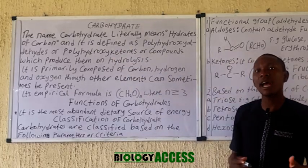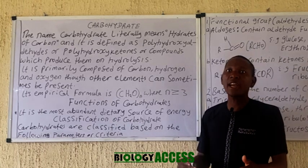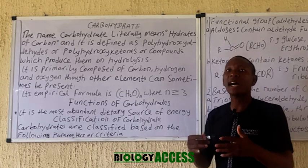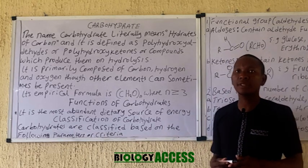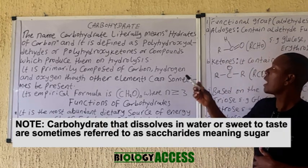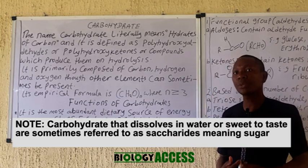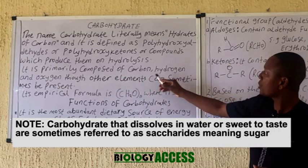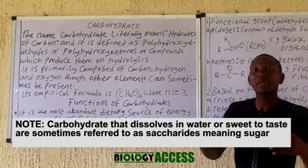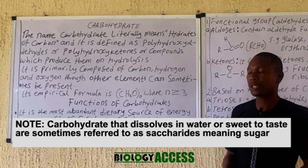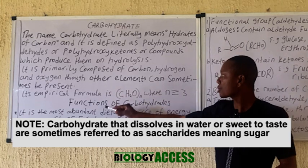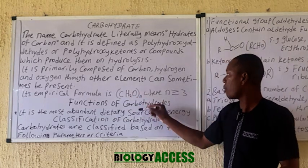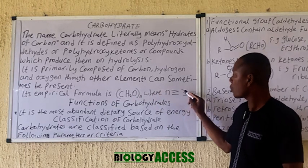Carbohydrates literally means hydrate of carbon, and it is defined as polyhydroxy aldehydes or polyhydroxy ketones, or compounds that actually produce them on hydrolysis. Carbohydrates is the most abundant biomolecule in nature and is primarily composed of carbon, hydrogen, and oxygen, though other elements may occasionally be present. Carbohydrates has the general formula CH₂O, where n is greater than or equal to 3.